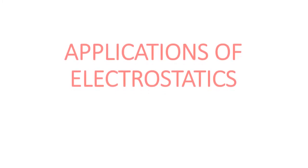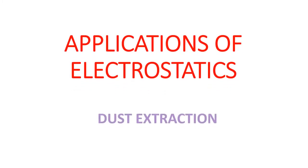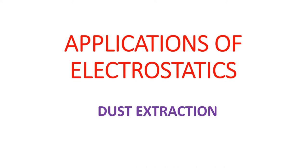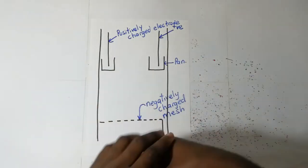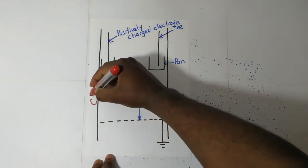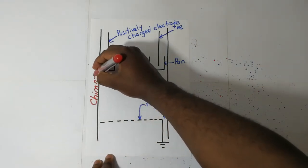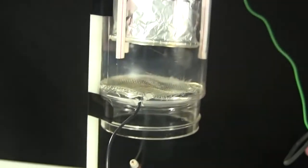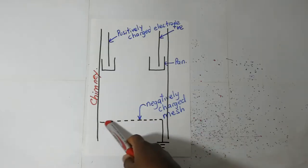Now in this session I'm going to explain how electrostatics is used in dust extraction. Let's assume that this is a chimney right here. Inside this chimney there is a mesh.